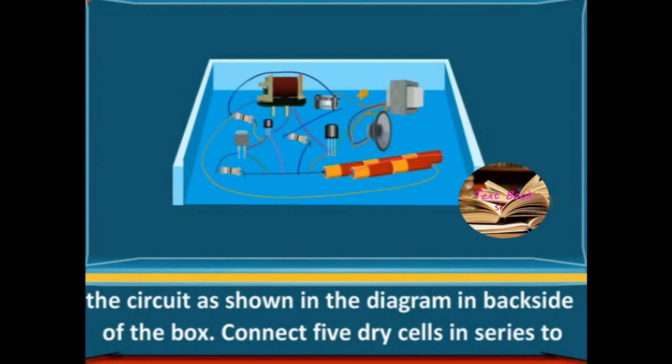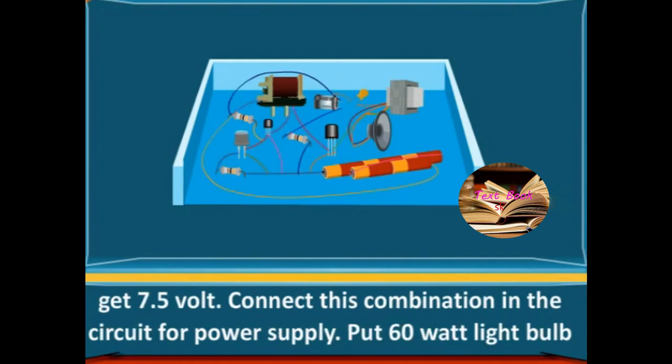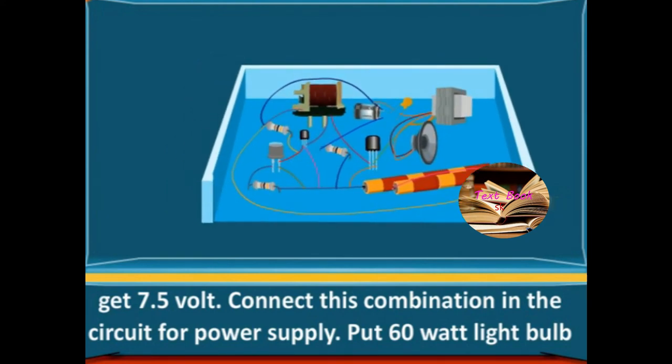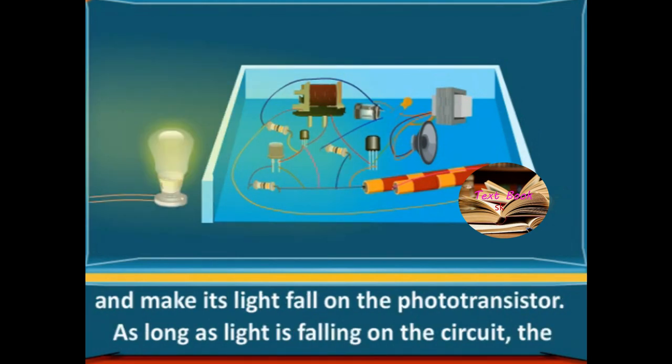Connect five dry cells in series to get 7.5 volts. Connect this combination in the circuit for power supply. Put a 60 watt light bulb and make its light fall on the photo transistor.